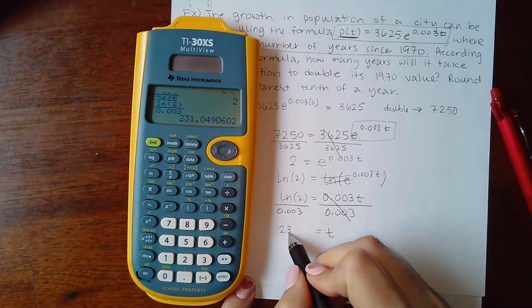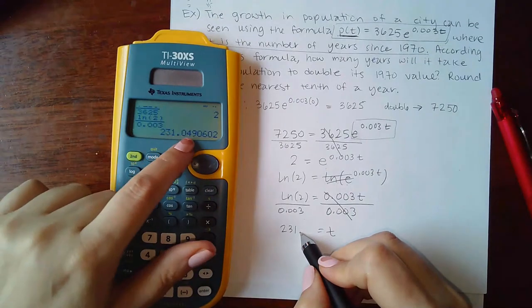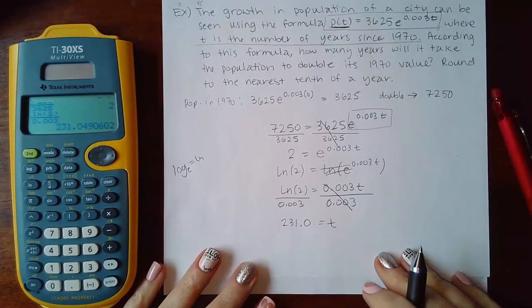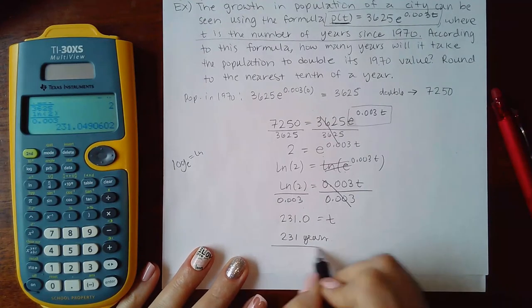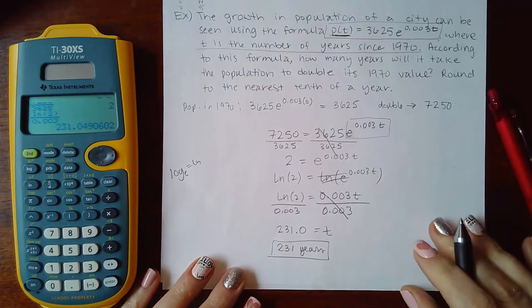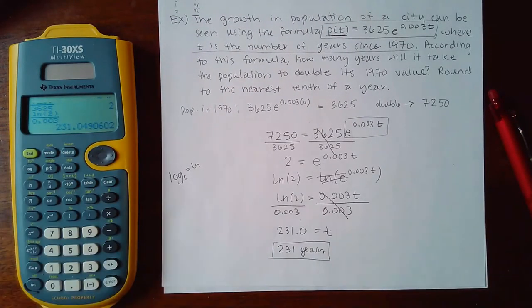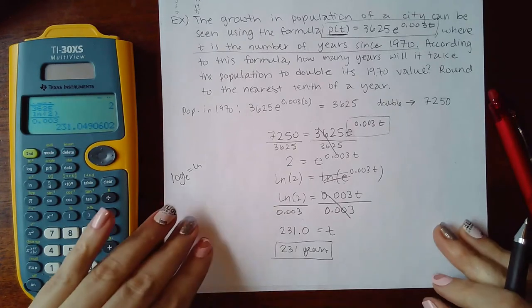And let's see we type that in the calculator, ln of 2 over 0.003, I get 231. It says round to the nearest tenth of the year, but that 4 isn't going to affect the 0, so it's just going to be 231. So it's going to take 231 years for this to happen. Now the question didn't say what year it would be, it just said how many years will it take for it to double, and it's going to take 231 years for that population to double.